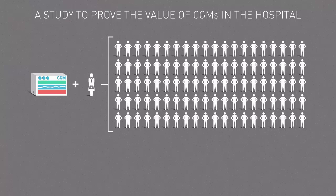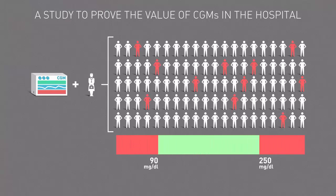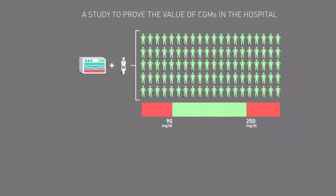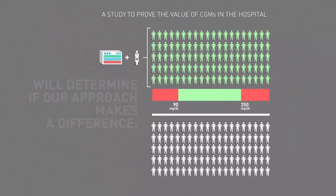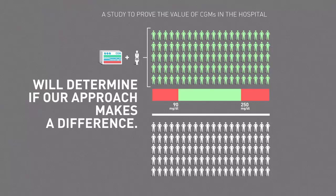CGMs will alert staff if a patient is trending toward hypoglycemia or severe hyperglycemia. A standardized glucose management algorithm, which incorporates CGM data and validation point of care testing values, will be used to achieve optimal blood sugar management. Patients who underwent standard procedures in the year prior, a control group, will determine if our approach makes a difference.